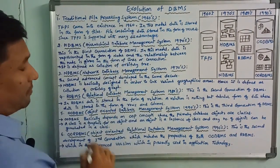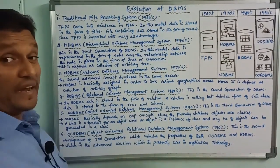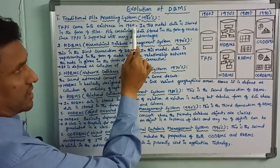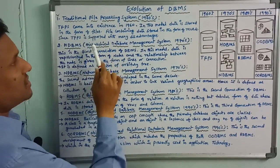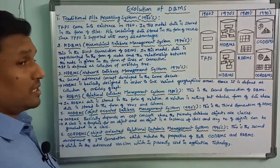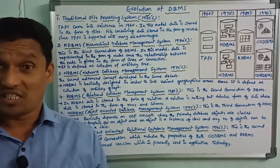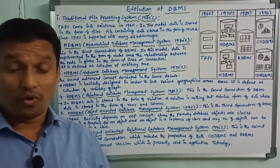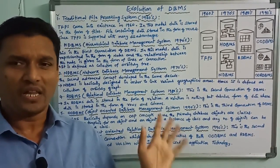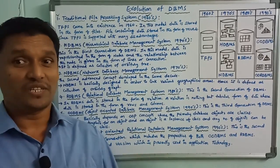The traditional file processing system came into existence in 1960. In this model, data is stored in the form of files. Files containing data are stored in the form of records.